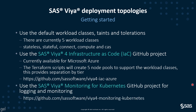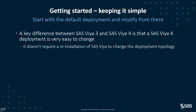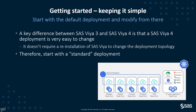I would start with the default deployment and modify it from there. A key difference between SAS Viya 3 and SAS Viya 4 is that the current version's deployment is very easy to change — it does not require a reinstallation of the SAS Viya software to change the deployment topology. Therefore, start with a standard deployment. Using the Terraform scripts, our Kubernetes cluster has five different node pools dedicated to our SAS software. In Azure, when we set up a Kubernetes cluster, we can set up one or more node pools, each with a set of identical servers providing resources for running the application pods.